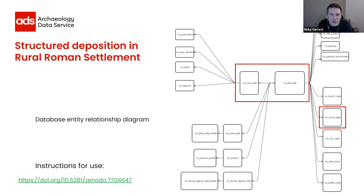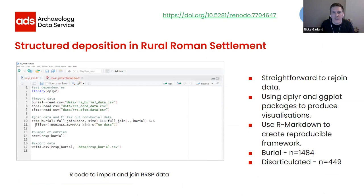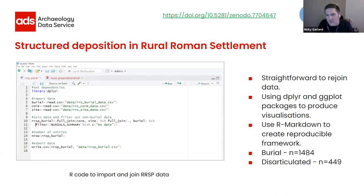I've provided instructions for how to go about this process, saved on my GitHub account — a short how-to-use guide of five to six pages on using Roman Rural Settlement data. In terms of the analysis, I used R. This little snippet on the left-hand side shows how easy it is to import the data and rejoin it all together — reading that data, joining it as a single database, determining the number of entries, and exporting it again. This code is included on my GitHub account for you to reuse, and it could be interchanged with any other data from the Roman Rural Settlement download page.